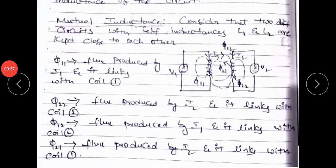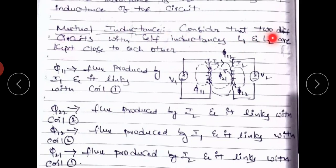The next topic is mutual inductance. Consider two different circuits with self-inductances L1 and L2 kept close to each other. These are two coils: the first coil has voltage V1 and current I1, and the second coil has voltage V2 and current I2. Four magnetic fluxes are produced.